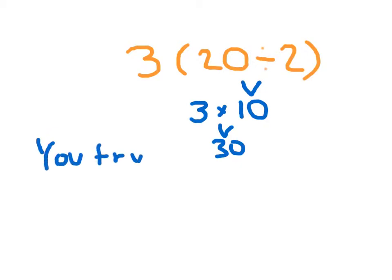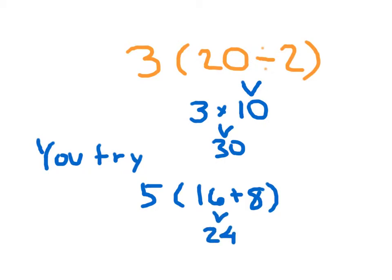Write this down for yourself and hit pause. That's 5 of (16 plus 8). 16 plus 8 is 24. 5 of 24, which is 5 times 24. You might need to work that out: 20 times 5 is already 100, and 4 times 5 is 20. So that gives us 120.